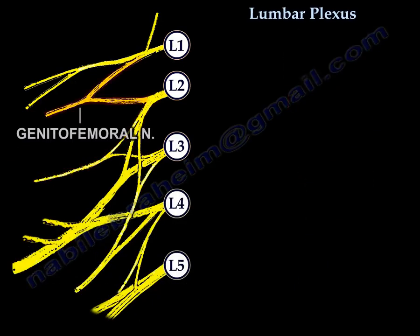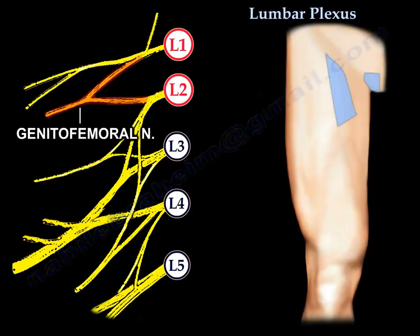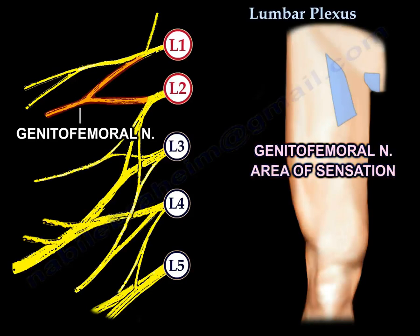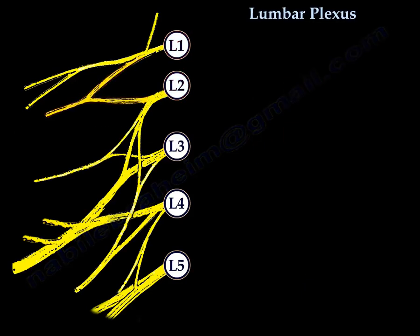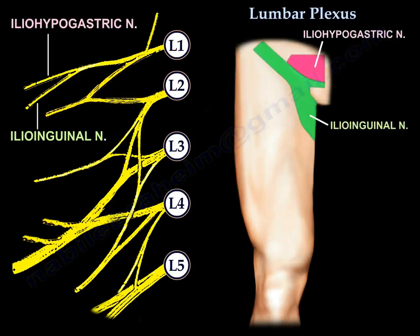The genitofemoral nerve comes from two nerve roots: L1 and L2. This is the sensory area of the genitofemoral nerve. This is the area of innervation of the iliohypogastric nerve, and this is the area of innervation of the ilioinguinal nerve.